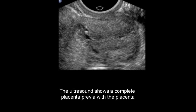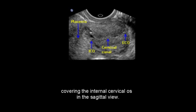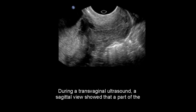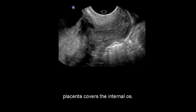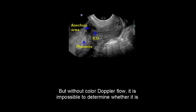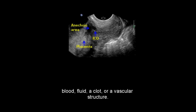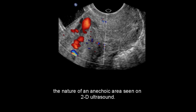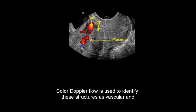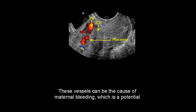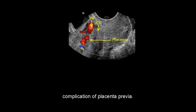The ultrasound shows a complete placenta previa with the placenta covering the internal cervical os in the sagittal view. During a transvaginal ultrasound, a sagittal view showed that a part of the placenta covers the internal os. There is also an anechoic area near this region, but without color Doppler flow it is impossible to determine whether it is blood, fluid, a clot, or a vascular structure. Color Doppler flow is then used to identify these structures as vascular, representing placental vessels, which can be the cause of maternal bleeding — a potential complication of placenta previa.